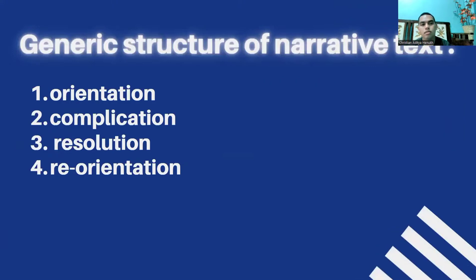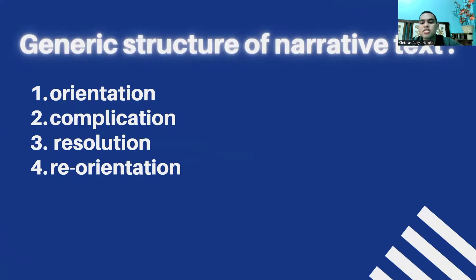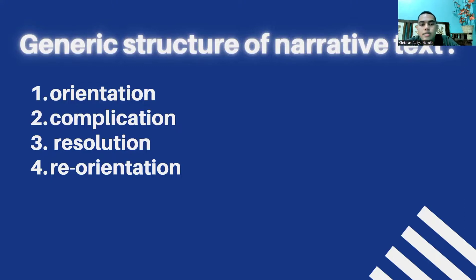Next, the generic structure of narrative text. First, we have orientation. Orientation — in Indonesian — means introduction. In the initial paragraph, the text usually contains the introduction of the characters and settings involved in the story. The setting can include the place of occurrence and the time of the story.